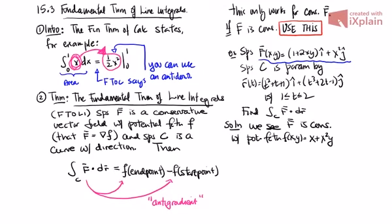Just to verify: if I take f sub x, I get (1 + 2xy), which matches the i-component. And if I take f sub y, I get x², which matches the j-component. There are several ways to find this — we had a procedure back in 15.1. In this case, it's conservative, and here is the potential function.